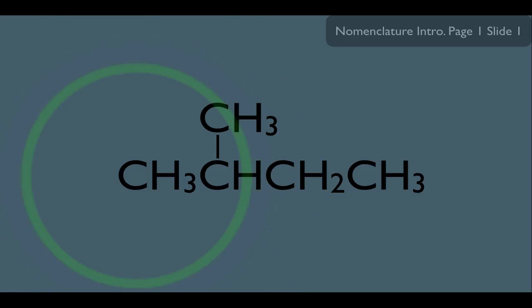For instance, what kind of carbon is this carbon right here? All you do is ask yourself one simple question. How many carbons are directly connected to that carbon? Well, this carbon to the right is the only one directly connected to him. So the kind of carbon he is, is a primary carbon.